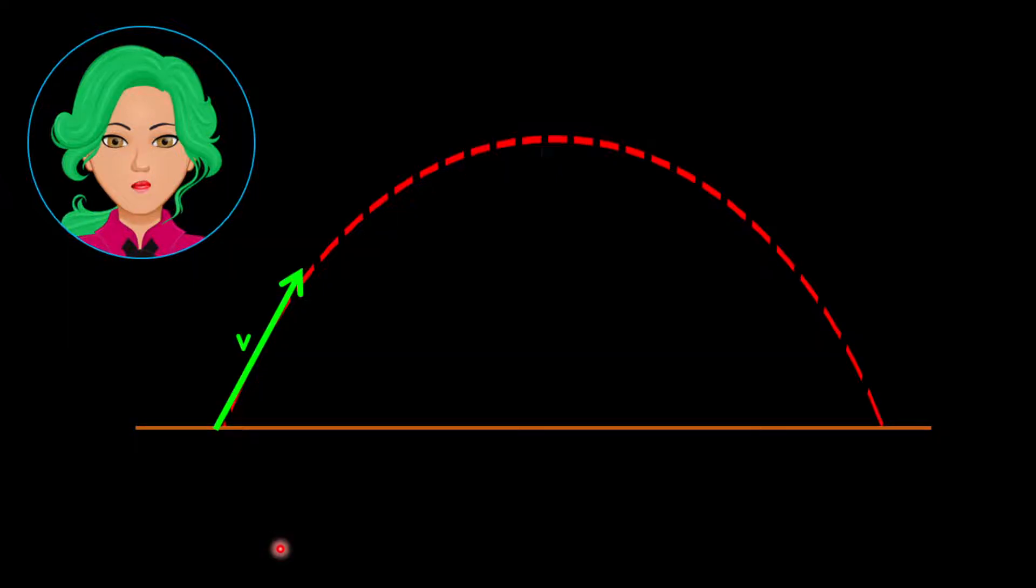1. The object leaves the ground with a certain velocity. This is the velocity of the object, and it is different from the velocities of the X and Y components.